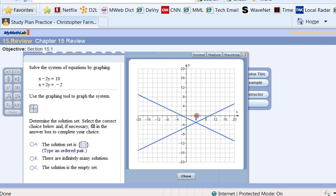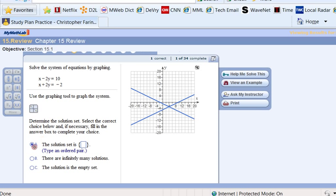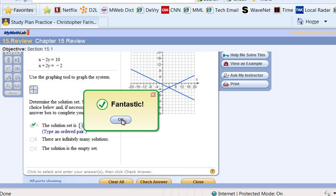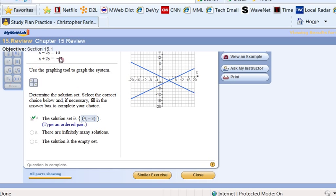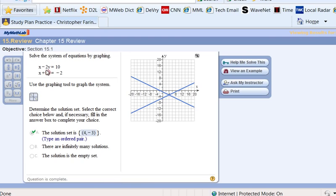That point right there, it looks like we went over 4 and down 3. Over 4 and down 3. So we tell MyMathLab that that's the solution. So we say that the solution set is, and we'll select the ordered pair tool, and 4 and negative 3. And check answer. And we had it. So that's how you graph a system of equations or solve a system of equations by graphing.